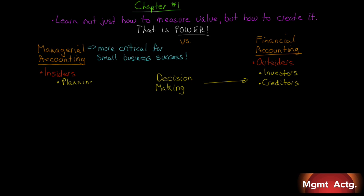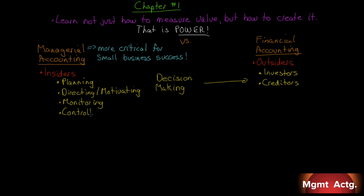Inside the organization, managers are concerned with certain functions: planning, directing and motivating, monitoring, and controlling. These are broad categories of activities that managers perform, and decisions have to be made in each of those categories. Those decisions have to be motivated with good data — hence, the need for managerial accounting.